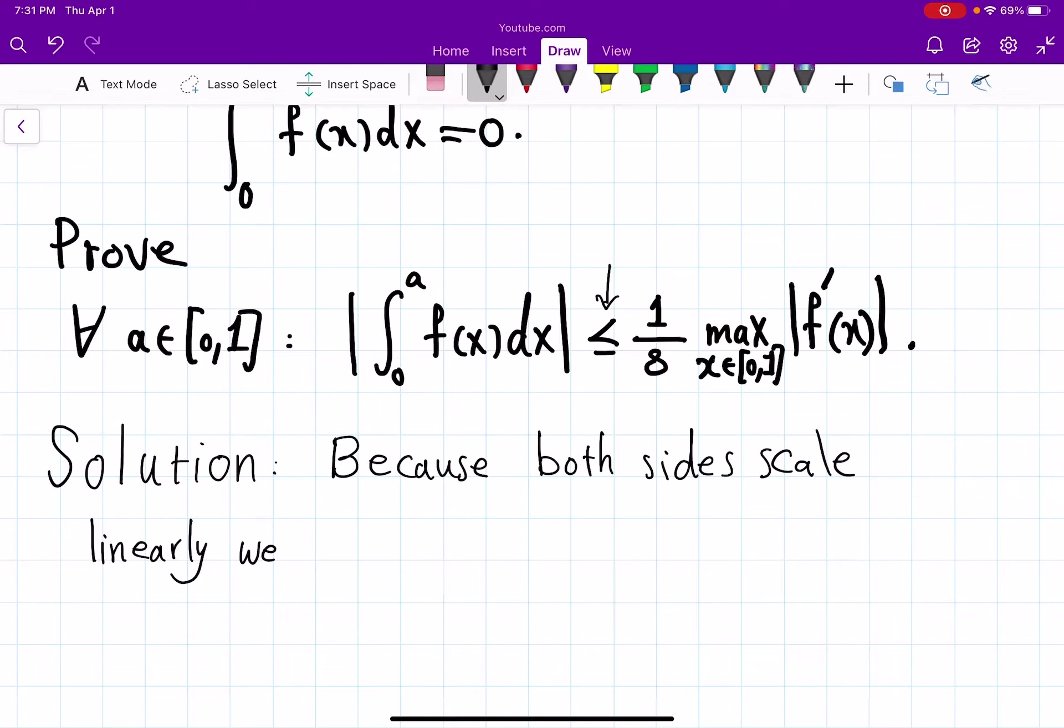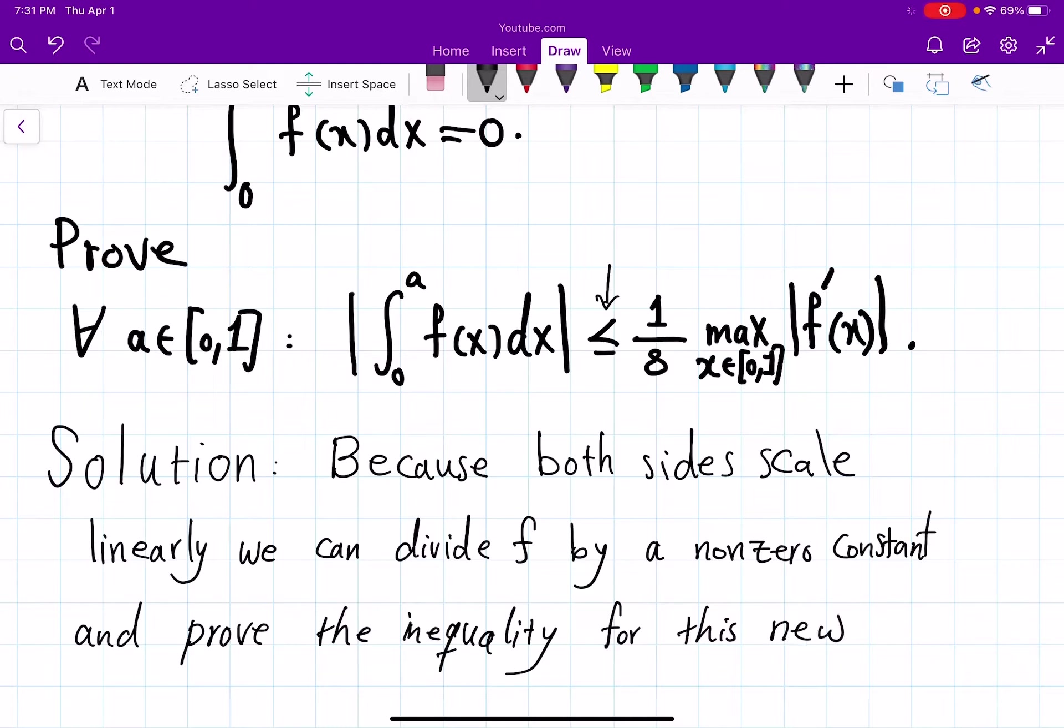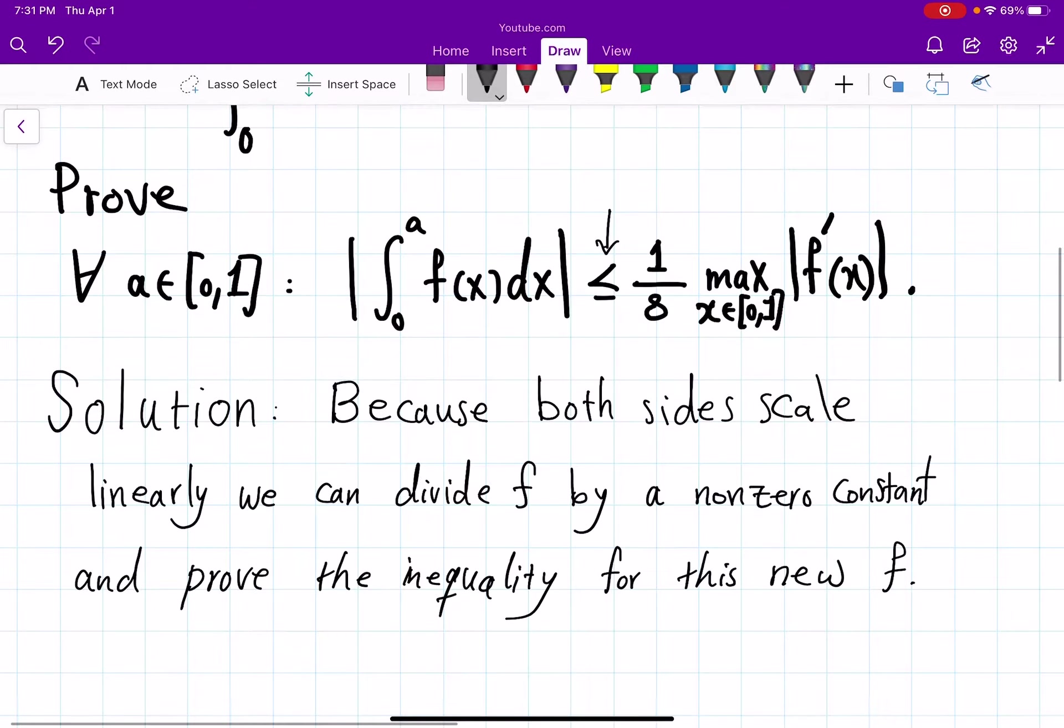we can divide f by a nonzero constant and prove the inequality for this new f. You kind of replace your f by f divided by your favorite constant. But what is the favorite constant here?